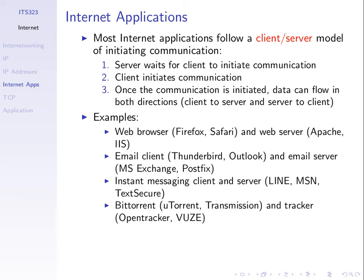Most applications used on the internet follow a client-server model. There are two applications involved in communications for it to work correctly. When we talk about internet applications, we mean applications that communicate across the internet to achieve some task. Running Microsoft Word on your computer is not an internet application — it's standalone and doesn't need internet access. We mean applications that need to communicate with other applications, usually following a client-server model where one is the client and the other is the server.